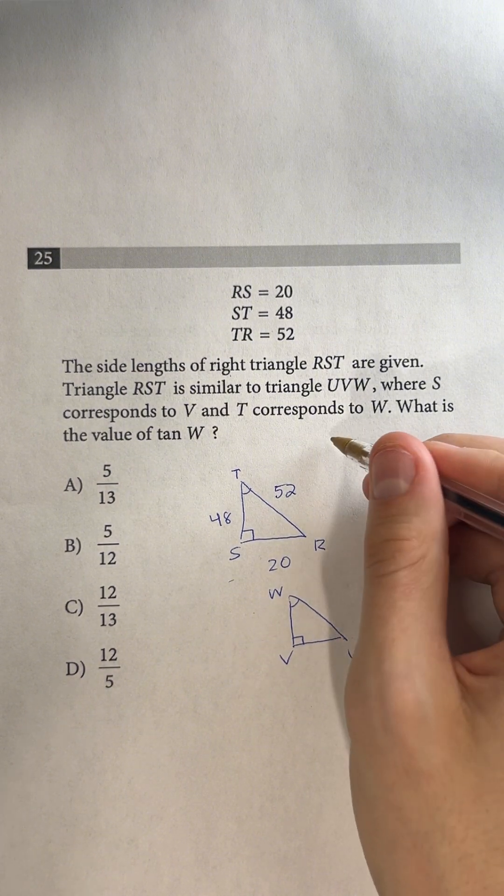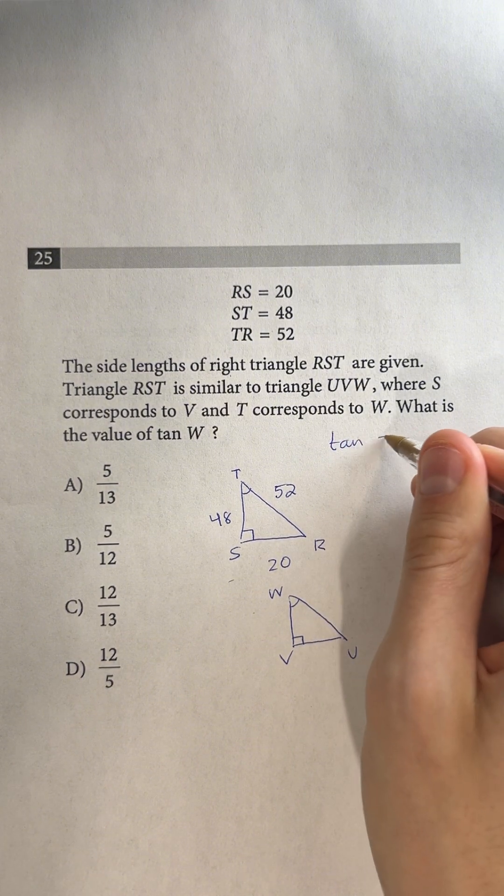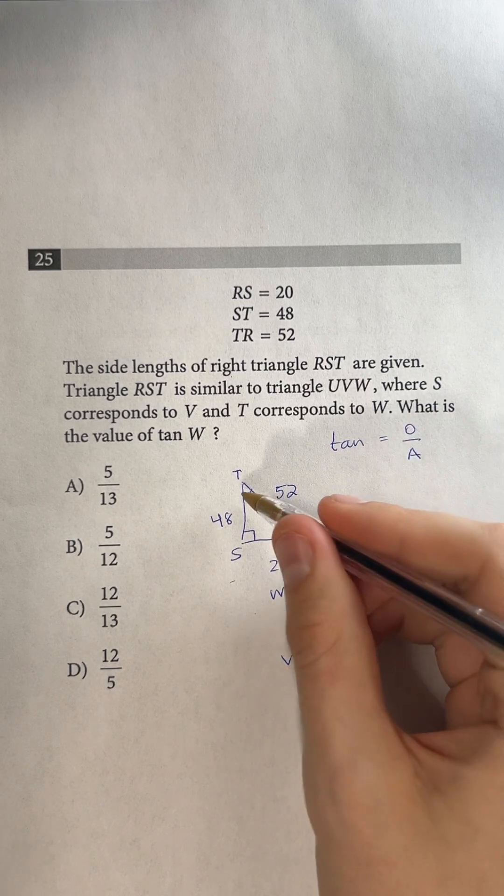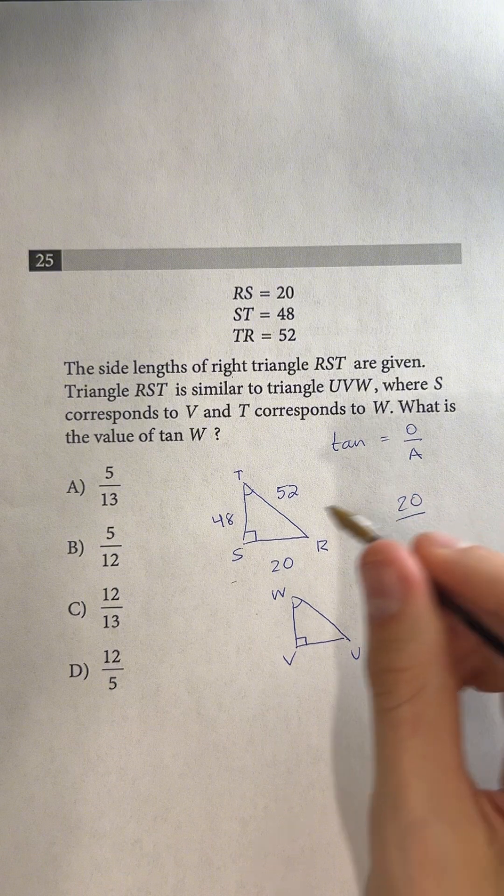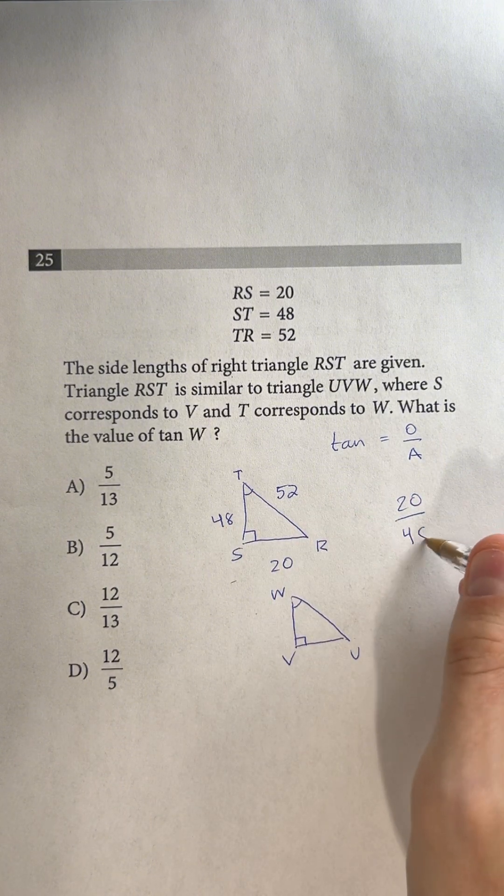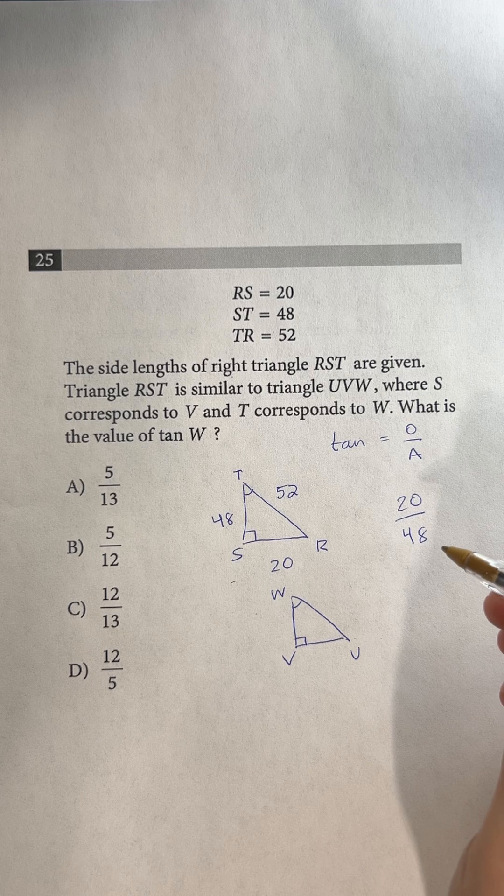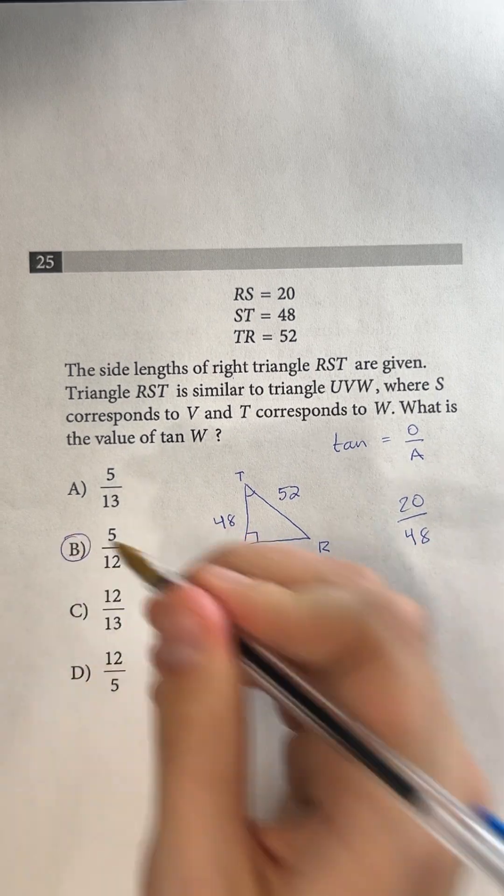We want to remember SOHCAHTOA. So tangent of an angle, we want to think TOA. So it's going to be opposite over adjacent. So the opposite is 20, and then over the adjacent is 48. So 20 over 48 simplifies to 10 over 24, which simplifies to 5 over 12. So our answer is going to be B.